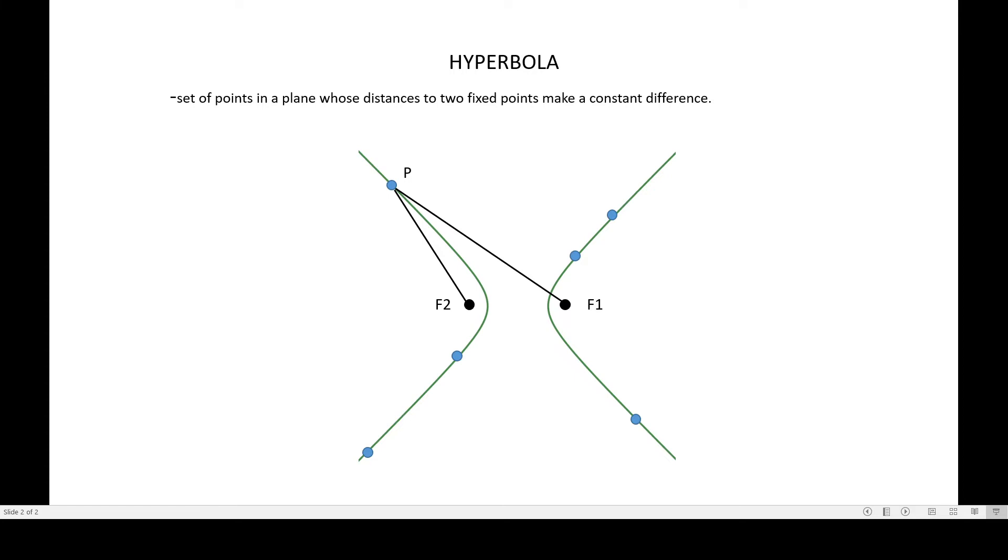That means the distances in the illustration will make a constant difference. What does it mean? Actually, in general, we can just make an expression for it. That is the absolute value |PF1 - PF2| is a constant.